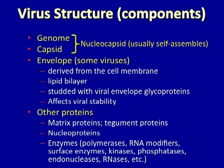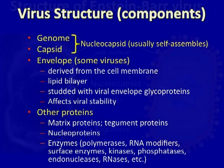The components of a virus are summarized on this slide. First you have the genome, which is either made of RNA or DNA, and it is surrounded by one or more proteins that form the capsid. Together these two components make up the nucleocapsid, which will self-assemble inside the cell when the capsid proteins and the genome are synthesized. Some viruses have an envelope derived from a cell membrane, composed of a lipid bilayer that may be studded with viral envelope glycoproteins. Those glycoproteins may be critical in interacting with the next cell that the virus infects.